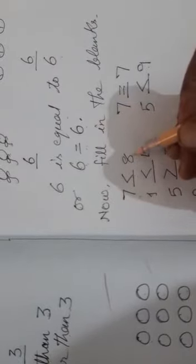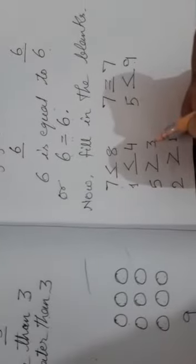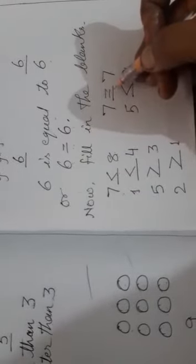Now, fill in the blanks. What will be here? 7. How you will write? 7 is less than 8 or 1 is less than 4. 5 is greater than 3 and in equal to sign, both the numbers, when both the numbers will be same, then you will put the sign of equal to.